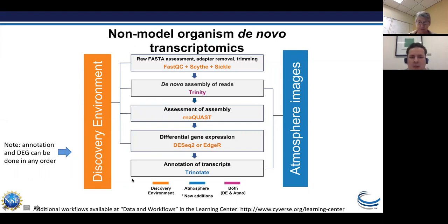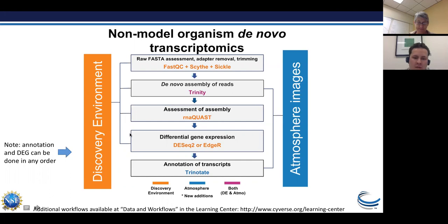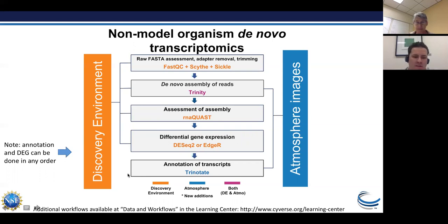Today we're going to finish the back half. We're going to do annotation of all of the transcripts — figuring out what those transcripts are and perhaps what their biological function is — and also identify differential gene expression between two different conditions. I'm going to do the annotation first because that's in Atmosphere, and then differential gene expression second toward the end.